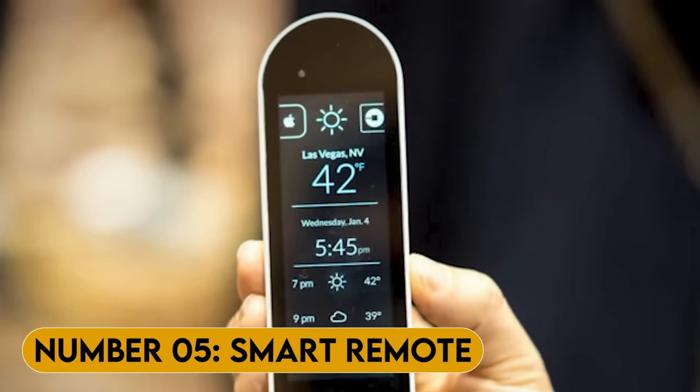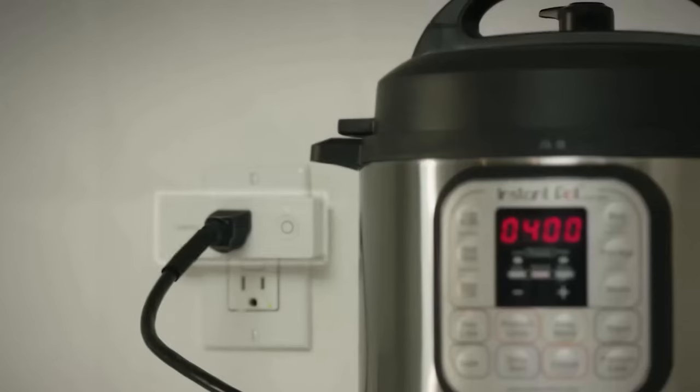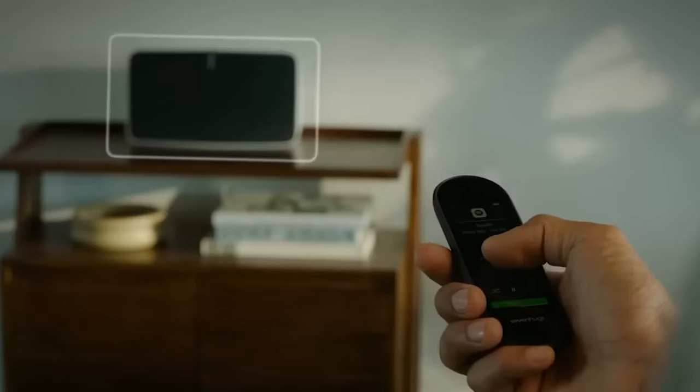Number 5. Smart Remote. How many times have you been snuggled up in bed, only to realize that you left the lights on or forgot to turn off the fan? It's the worst, right? Well, with the Smart Remote, you can control all your bedroom electronics from the comfort of your bed. No more getting up to switch off the lights or adjust the temperature. But wait, it gets better.